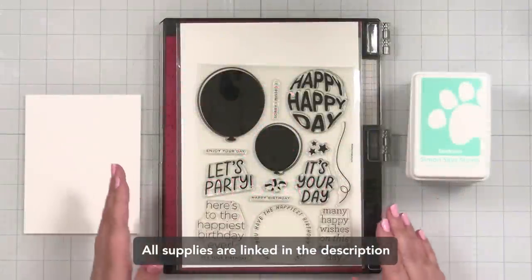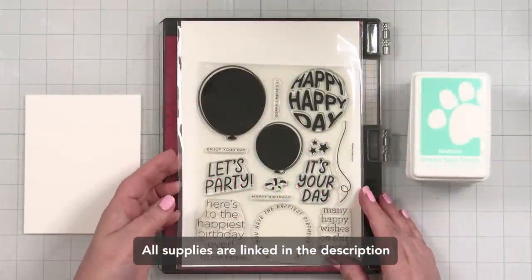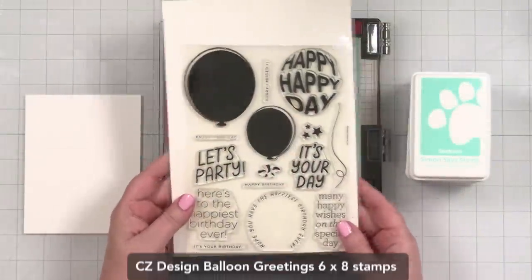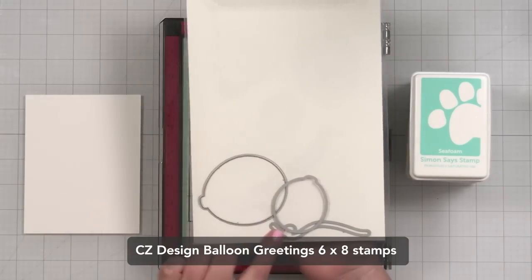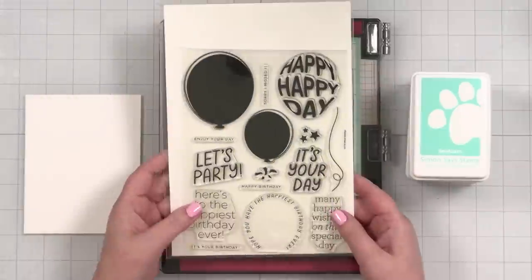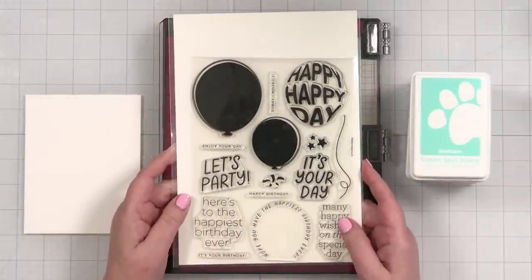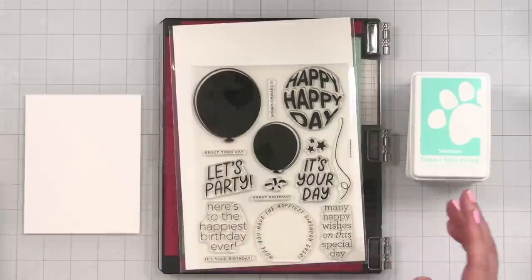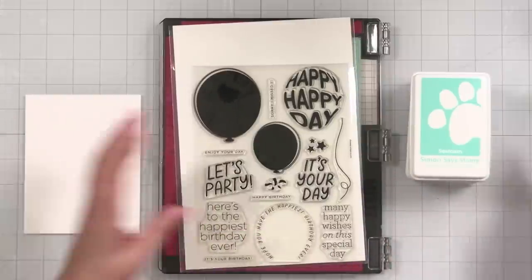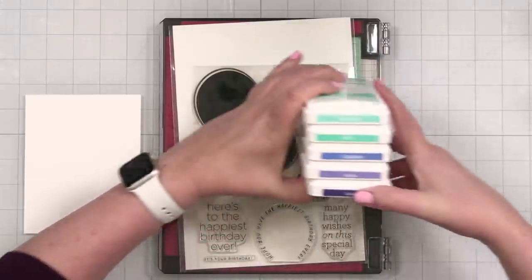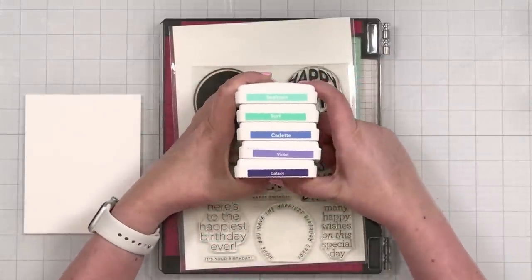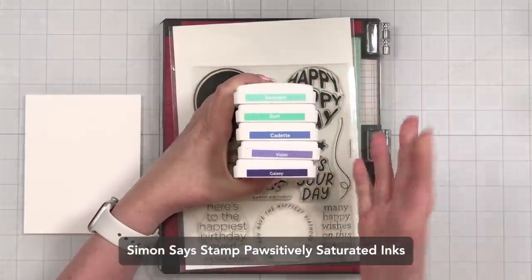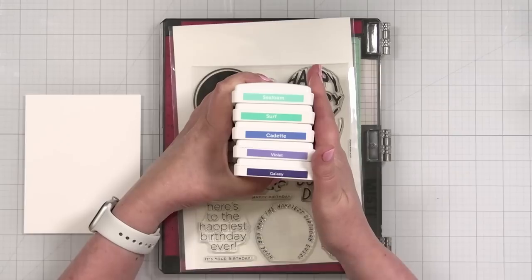Here's a look at the stamp set I'm going to use today, the Balloon Greetings set. I do have the coordinating dies, but I think I'm mostly going to stamp today. I want to show you a simple way to take some colors you like. I've got this whole collection here from Simon Says Stamp basically in rainbow order, going on the cooler side.